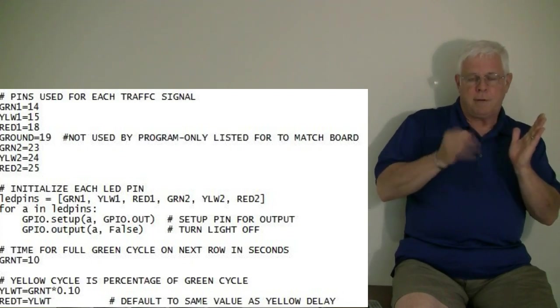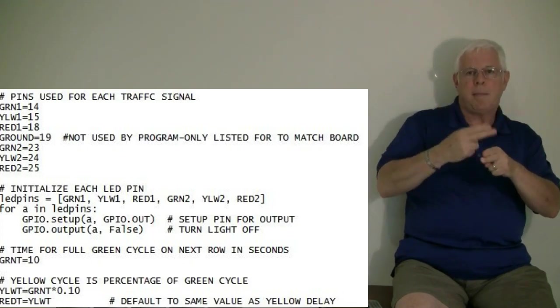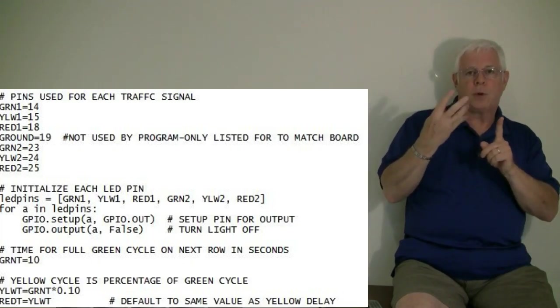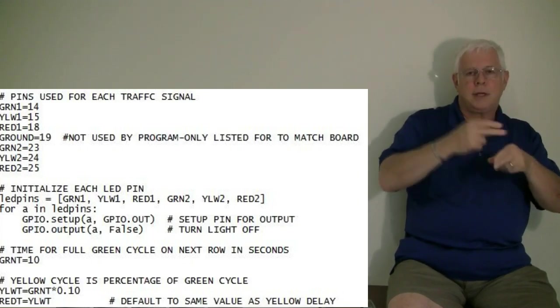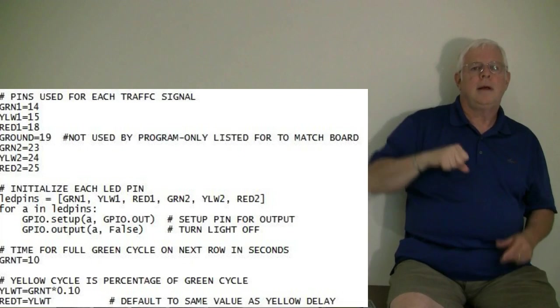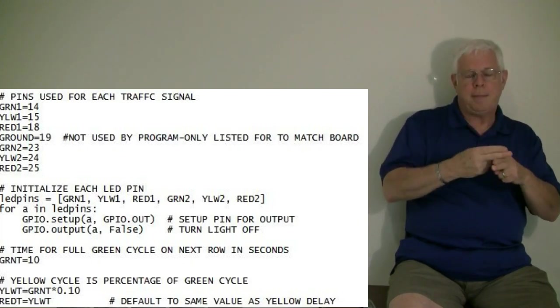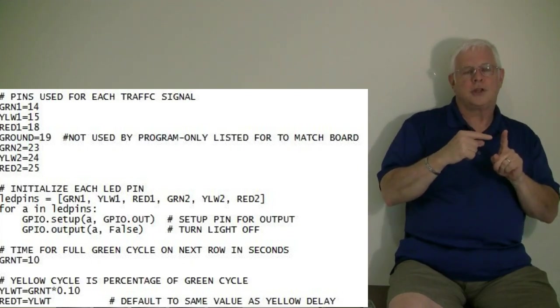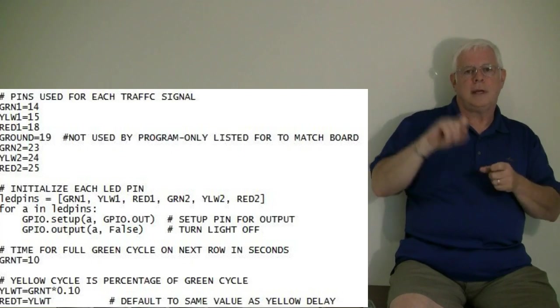On the second page of our program, we're going to name each of the colored lights and show the pin number for each. For example, green one is pin number 14. Then it repeats for each colored light. Then we're going to put all the pin names into an array named LED pins. Then we're going to use a for command and it's going to execute for each pin name two statements. The first one identifies to Python that it's going to be an output pin, meaning it's going to control a light. And then on the second statement, it's going to turn the light off.